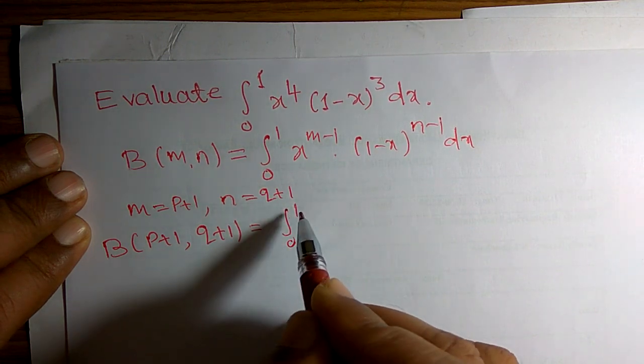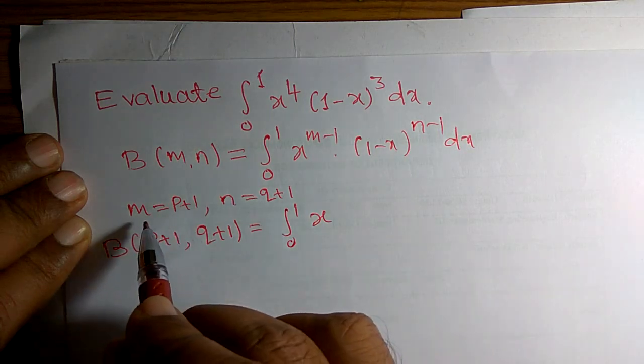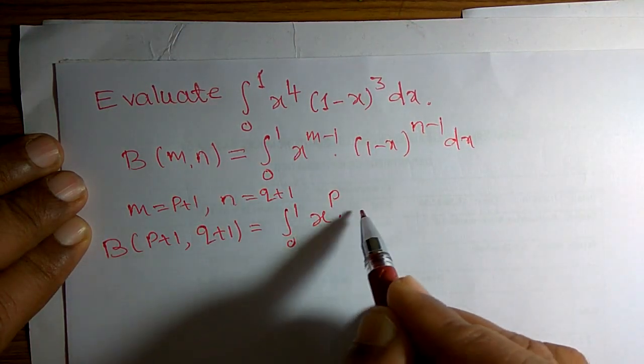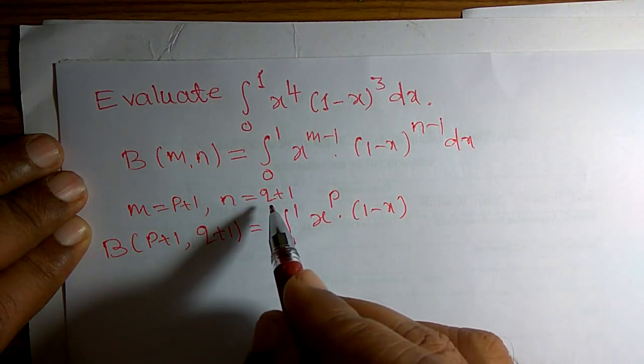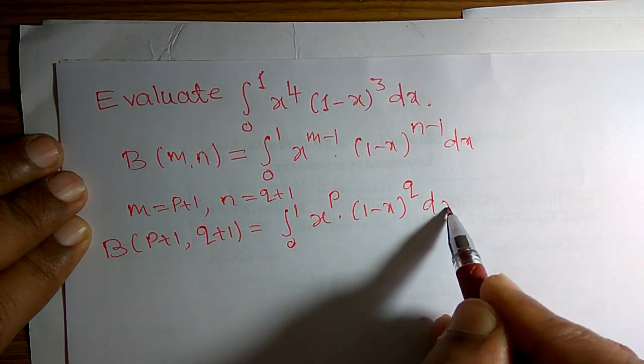The definition can be written as beta of p plus 1 comma q plus 1 equals integration 0 to 1, x to the power—I can replace m by p plus 1 minus 1, means x raised to p, into 1 minus x raised to n can be replaced by q plus 1 minus 1, means q dx.